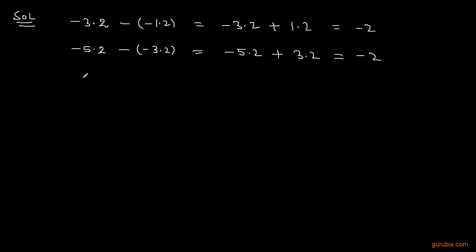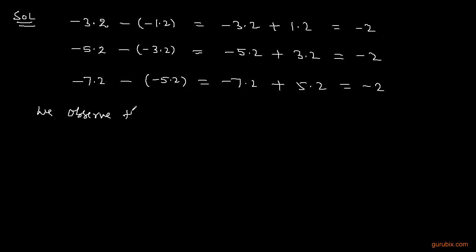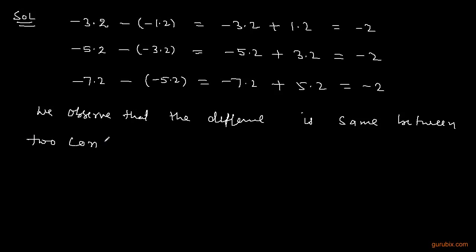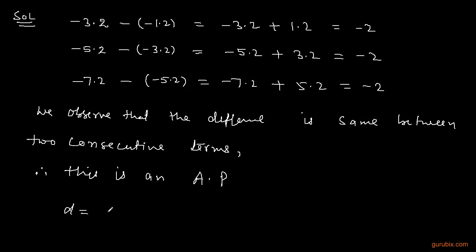Now we shall subtract the third term from the fourth term. The fourth term is minus 7.2 and the third term is minus 5.2, so this is minus 7.2 plus 5.2, and we again get minus 2. We observe that the difference is the same between every two consecutive terms, therefore this is an AP, and the common difference d is equal to minus 2.